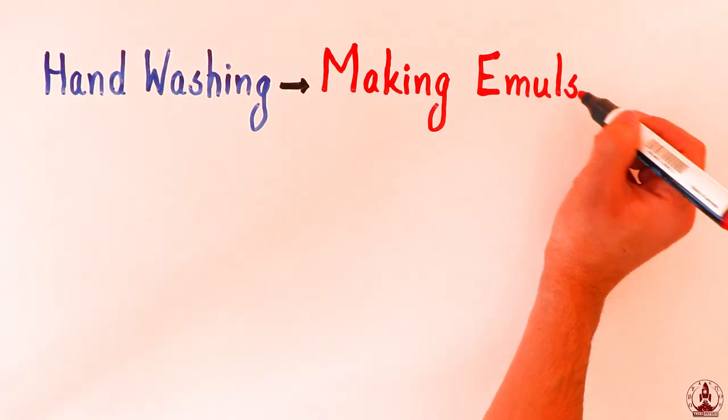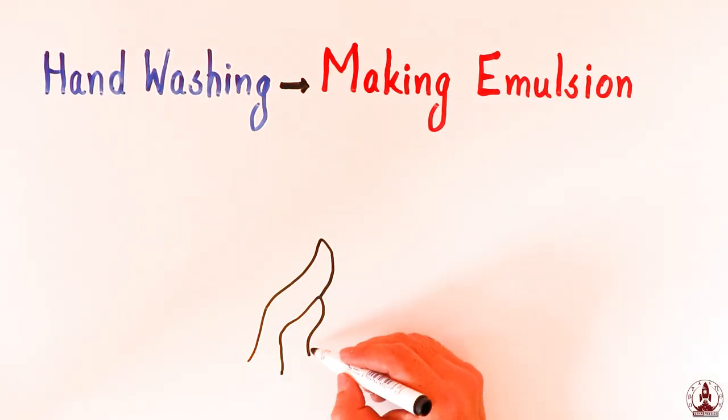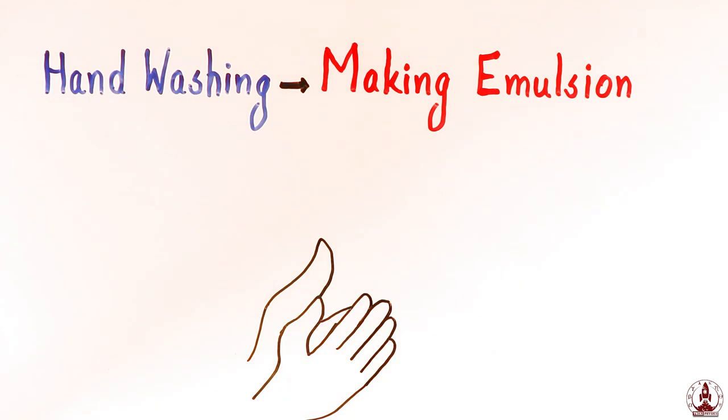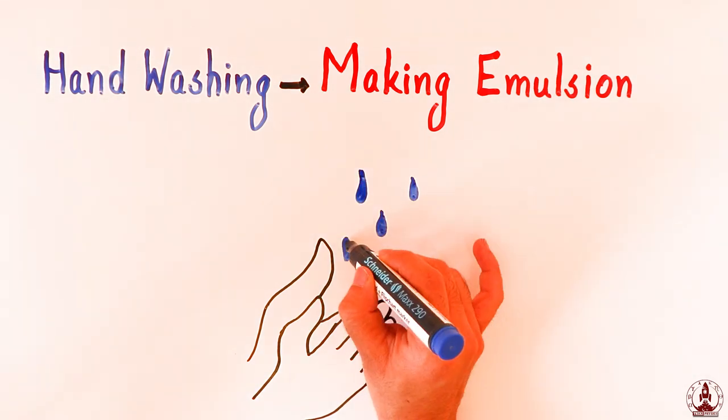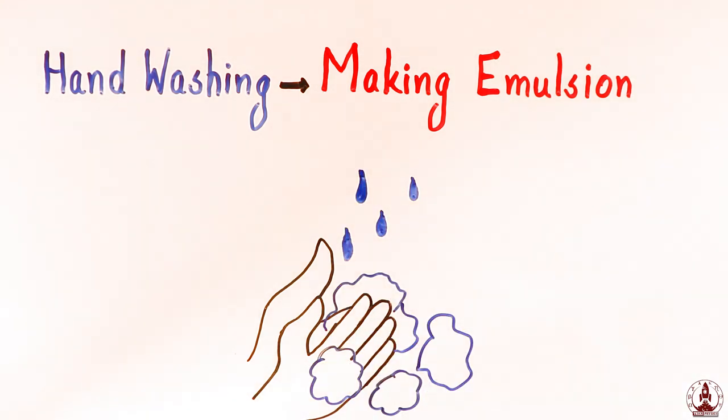In the process of hand washing, you are making emulsion. The dirt sticks with the oil in your hands and during the hand washing process, you put the surfactants with the help of soap and start making emulsion. Those emulsions are carried away by the water mixed with the soap, along with the dirt in your hands.